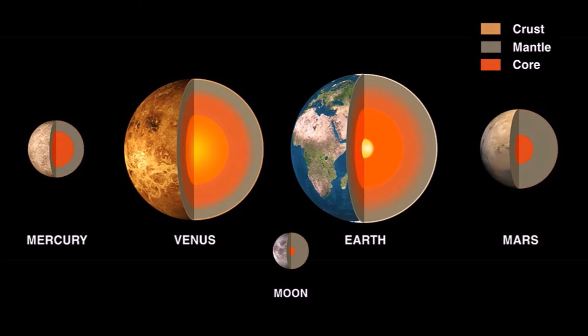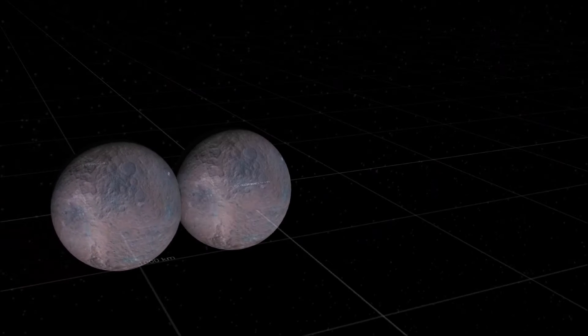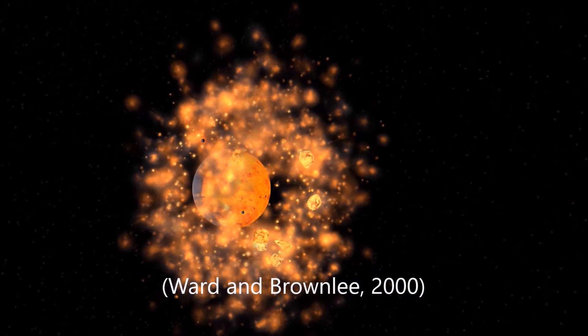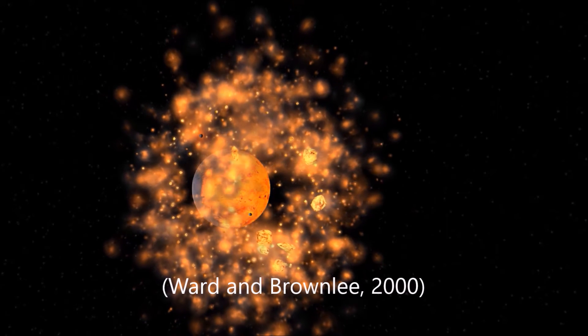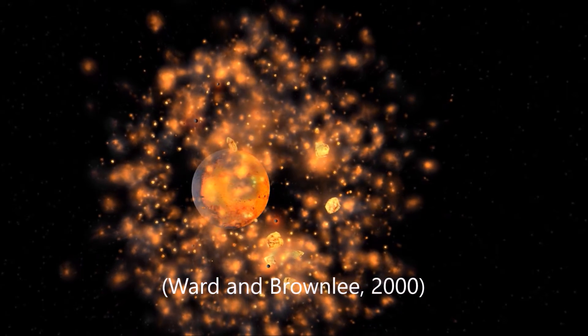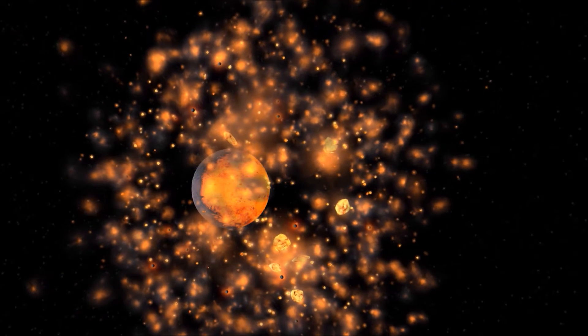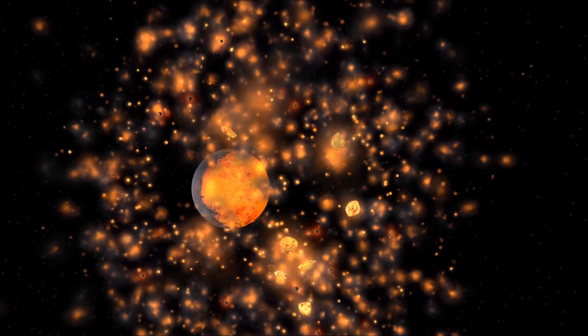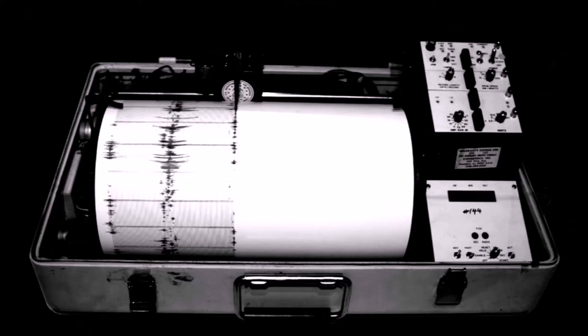This implies that the moon did not form in the same accretionary process as the inner planets. According to Ward and Brownlee, the dense iron cores of the Earth and Theia merged as they collided, and mantle ejecta from both bodies, which lacks iron, is what formed the moon, providing an explanation for the moon's lack of iron.